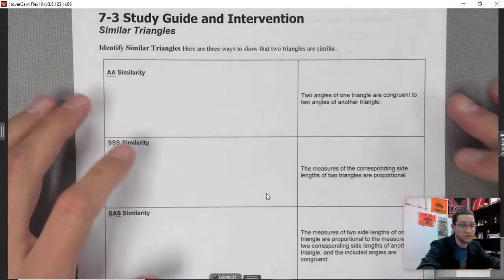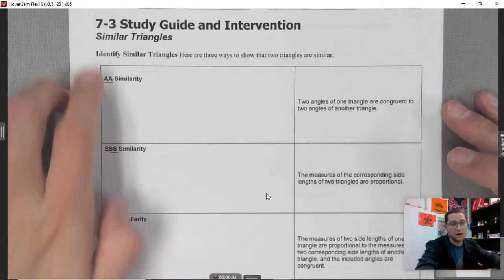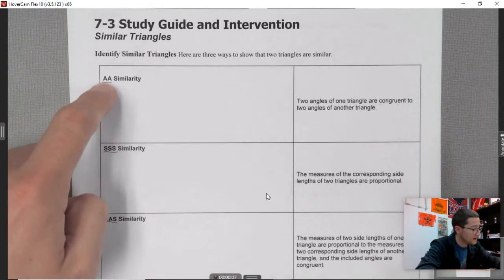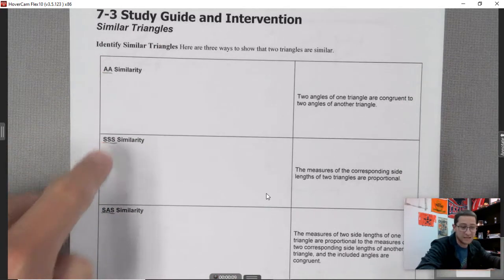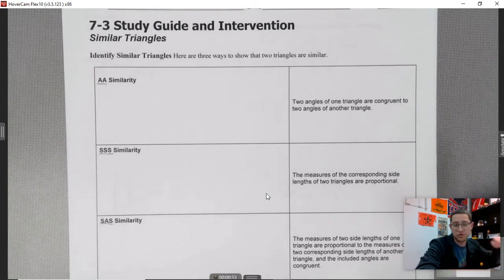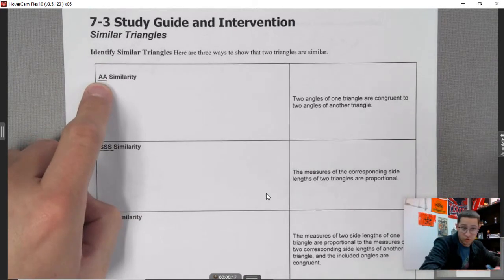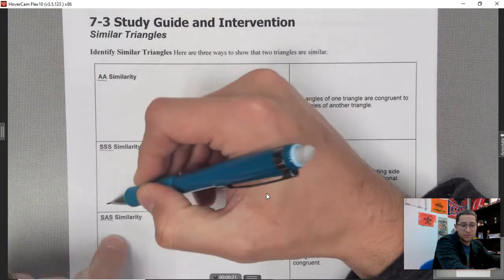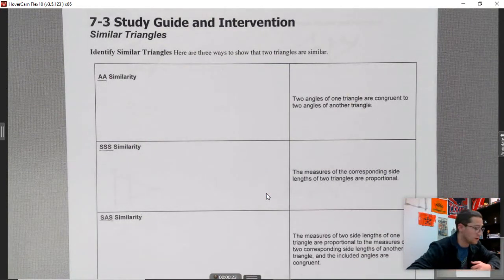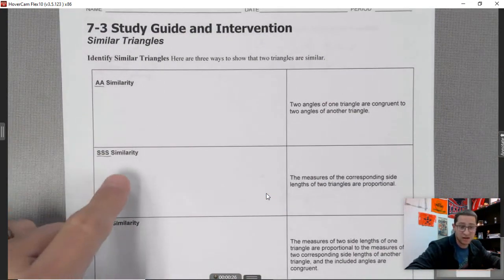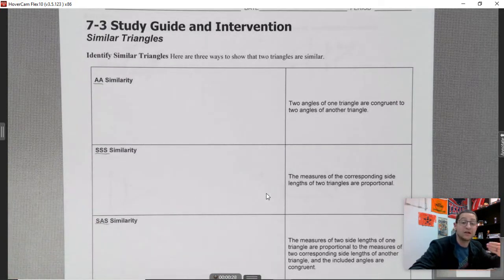We're going over three concepts today with 7-3 similar triangles. Those three concepts are angle-angle similarity, side-side-side similarity, and side-angle-side similarity.